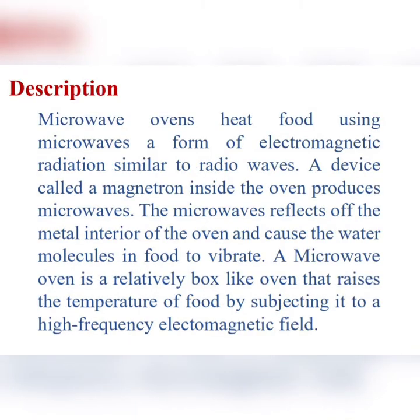Microwave ovens work by using microwaves, a form of electromagnetic radiation similar to radio waves. A device called a magnetron inside the oven produces the microwaves.